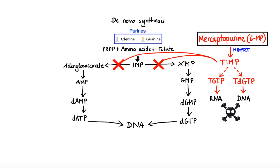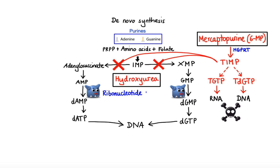Now let's move on to the next anti-metabolite drug, hydroxyurea. The main target of hydroxyurea is an enzyme responsible for the conversion of ribonucleotides into deoxyribonucleotides, called ribonucleotide reductase (RNR). Hydroxyurea inhibits this enzyme, which results in nucleotide deprivation, stalling of replication fork progression, and ultimately S-phase cell cycle arrest in proliferating cells.